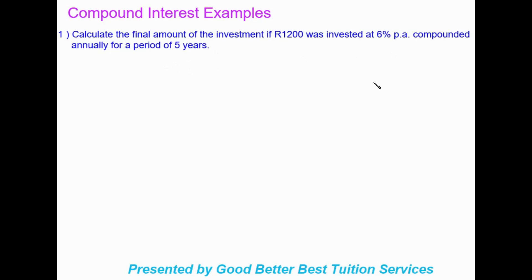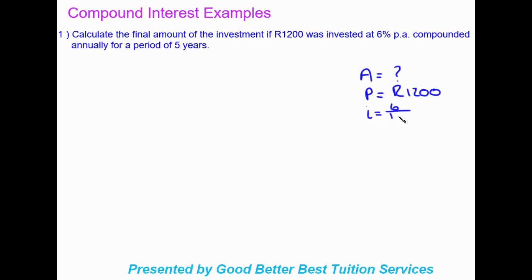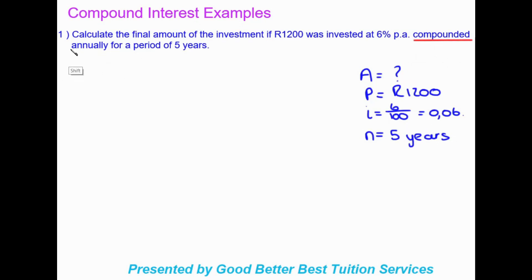We start by writing down what we know. Our future value A is what we're trying to find. The original amount P is R1200. The interest rate i is 6% which is 6/100 or 0.06 as a decimal. The number of years n is 5. They say compounded annually — the word 'compounded' tells us we're using compound interest.